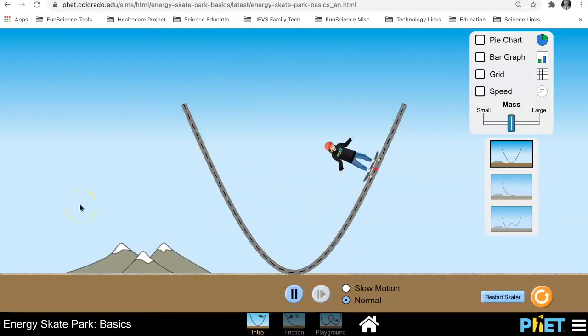what we're looking at here is the difference between the energy of position, potential energy, and the energy an object has because it's in motion, kinetic.